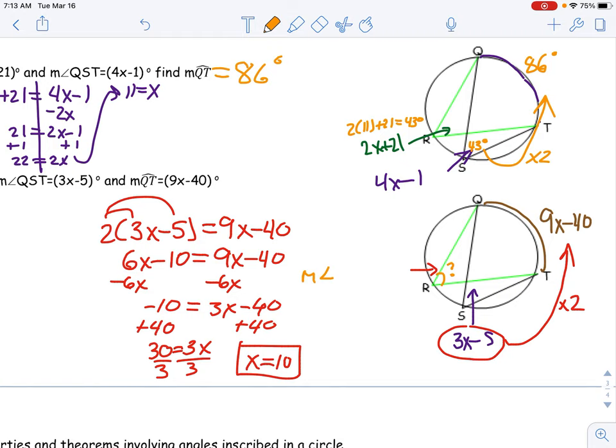Alright, and then it told me to find the measure of angle QRT. Well, it's just going to be the same as 3x minus 5. Remember, those angles are the same because they share an arc. So plug in 10 there, a bunch of math happens, and we get 25 degrees.